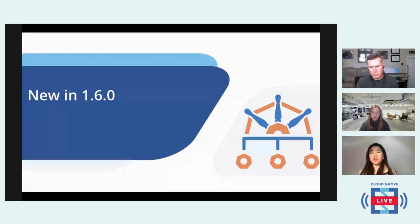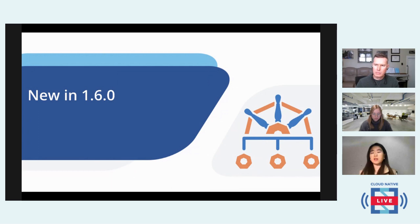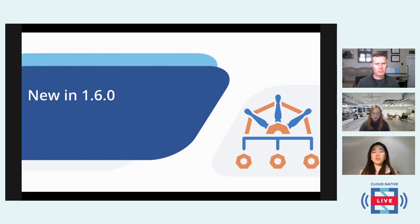There are a lot of good resources out there for introductory content on how you can use Kyverno to apply basic mutate and validate policies. Today we're mostly going to focus on the new features in 1.6.0, since this is the big release after KubeCon last year in October. This release includes a lot of new features and critical enhancements, and we're going to highlight some of them in today's session.